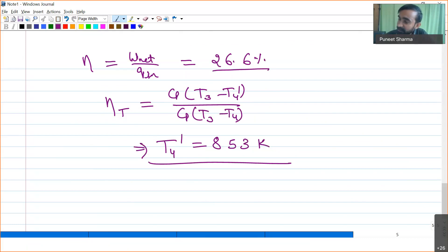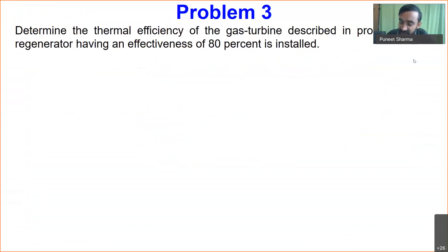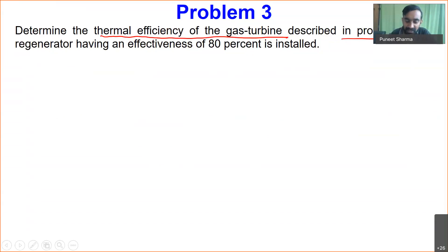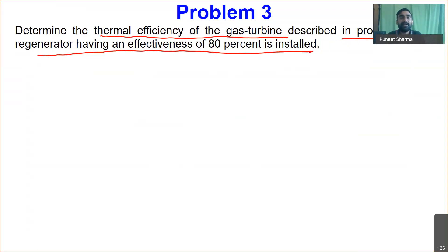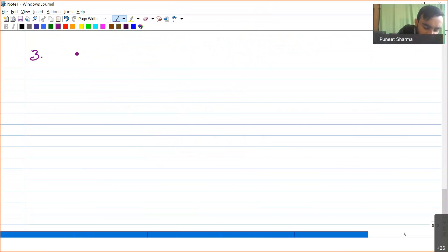Now let me take up Problem 3, which includes regeneration in the actual cycle. Here we have to determine the thermal efficiency of the gas turbine described previously, but with one additional element: a regenerator having an effectiveness of 80%. So we are using a regenerator with 80% effectiveness in the actual cycle.